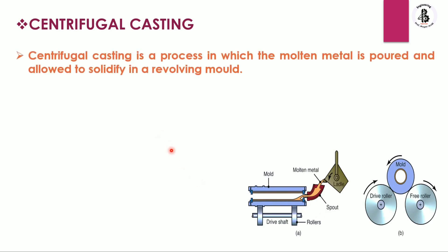Centrifugal casting is a process in which the molten metal is poured and allowed to solidify in a revolving mold. The drive roller rotates in a clockwise direction and the free roller also rotates in a clockwise direction. The rotating mold, supported on these rollers, rotates in an anti-clockwise direction. Due to this rotation, a centrifugal force is generated, which causes the molten metal to attach onto the inner surface of the rotating mold.